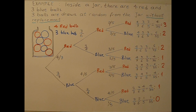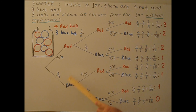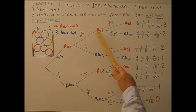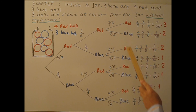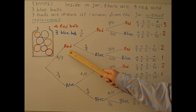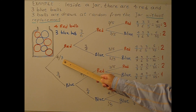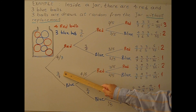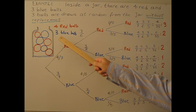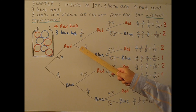For the first draw, the ball can be red or blue. If the first ball is red, the second ball can also be red or blue. I build out the tree this way. The probability the first ball is red is 4 over 7, since there are four red balls out of seven total. The probability the first ball is blue is 3 over 7.